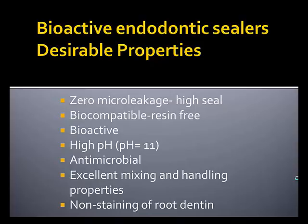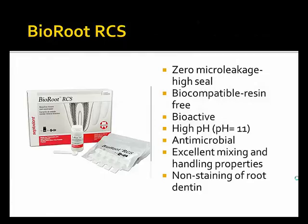We're now moving into the area of bioactive endodontic sealers. They have all the desirable properties that we want: zero microleakage with a high seal, biocompatible and resin-free, bioactive with a high pH of about 11, antimicrobial, excellent mixing and handling properties, slower setting than some other materials, and non-staining to root dentin. Among these products is BioRoot RCS. Where Biodentin was fast setting, the same chemical formulation has now been reformulated to be slower setting, giving it clinical applications where in the past we were forced to use MTA — now we can use a sealer with the properties of a calcium silicate.